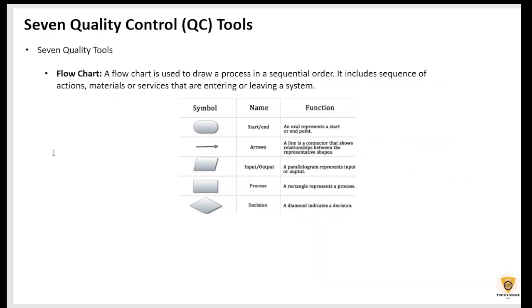The seventh quality control tool is a flow chart. Now, what's a flow chart? Flow chart is used to draw a process map in a sequential order. Right? I will say here, we will start from here. And in the input, whatever happens, we will end. So, these are the symbols that can be used for making a flow chart.